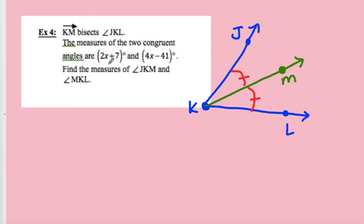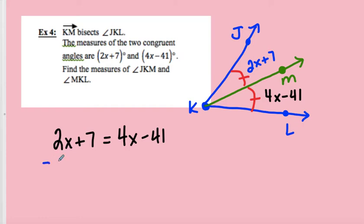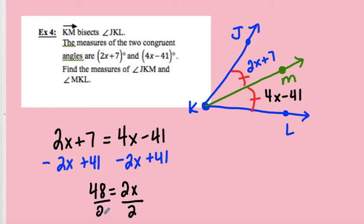So it says the measure of the two congruent angles are 2x plus 7, so I'm going to mark that, 2x plus 7, and 4x minus 41. Alright, find the measures of JKM and MKL. Well remember, if angles are congruent, then they have equal measure, so that means that I can write an equation. I can say that 2x plus 7 equals 4x minus 41. So now I'm going to solve for x. So I'll do my algebra, subtract 2x on both sides, and add 41 on both sides. So that's going to give me 48 equals 2x, and I'm going to solve for x. And so x equals 24.